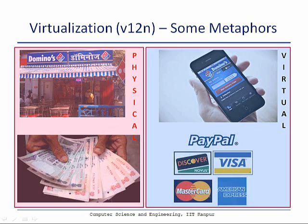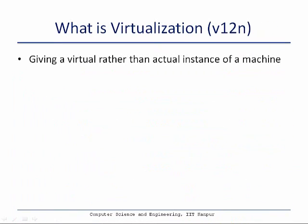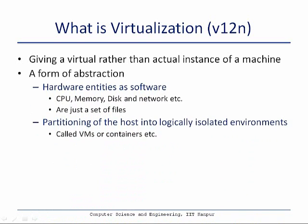A similar concept applies to computing, where virtualization of computing resources means you do not get a physical actual instance of a computing resource such as a computer — rather, you get a virtual instance of it. Typically, the hardware resources such as CPU, memory, disk, network, which are part of the computer, are offered as software entities. Essentially, they are a set of files which can be manipulated by programmatic means, and in that way they offer a form of abstraction.